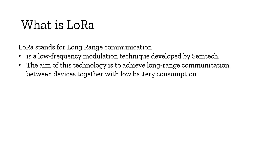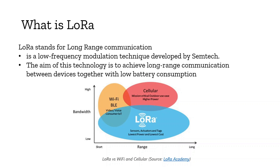LoRa is mainly used for long-range communication applications, and its key goal is to achieve long range between devices together with low battery consumption. You can refer to this diagram from LoRa Academy — the x-axis shows range and the y-axis shows bandwidth. Wi-Fi and Bluetooth have high bandwidth and short range; cellular networks have higher bandwidth and higher range. LoRa sits in the long-range, lower-bandwidth category, which is something very important to appreciate.